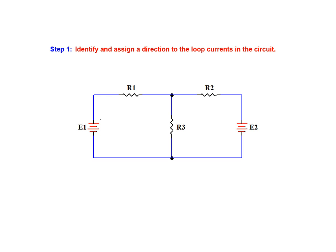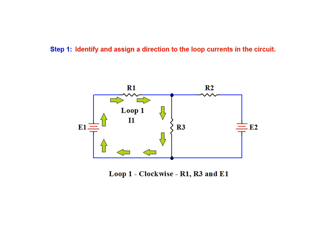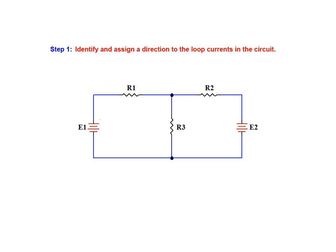We begin by identifying and assigning a direction to the loop currents in the circuit. The first loop current I1 flows through resistor R1, resistor R3, and voltage source E1. We have arbitrarily chosen a clockwise direction to represent the current flowing around loop 1. The second loop current I2 flows through resistor R2, voltage source E2, and resistor R3. As with loop 1, we've assigned a clockwise current flow direction for loop 2.